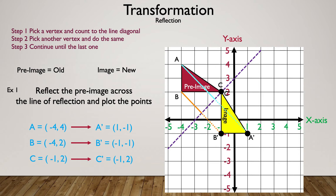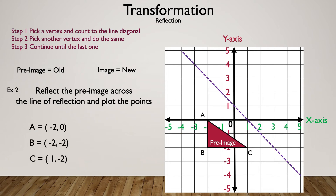Now let's look at example two — same type of question. We already have our pre-image; let's reflect it. Starting with vertex A: counting diagonally, we're at one, then one and a half — that's the line. Now we count one and a half away from the line on the other side: half, one and a half. A prime is (1, 3).